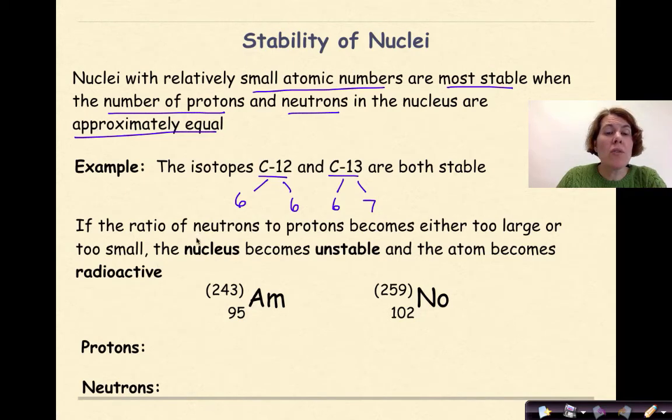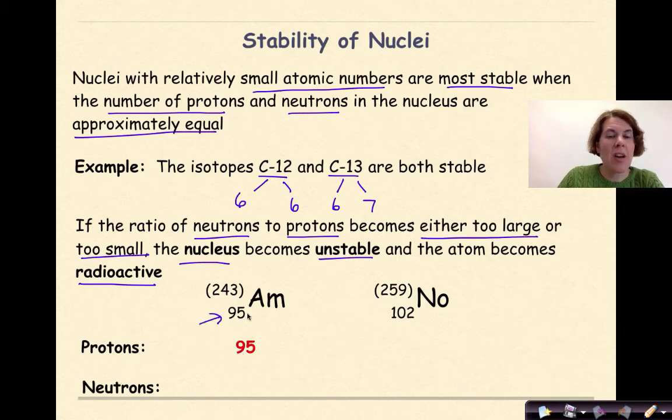But if the ratio of neutrons to protons becomes either too large or too small, the nucleus becomes unstable and the atom becomes radioactive. So here I have americium-95. Number of protons? 95, because I see it right here. But if I take the difference between the atomic mass of 243 minus 95, I'm going to get 148 neutrons. That's a pretty big difference between the number of protons and the number of neutrons.